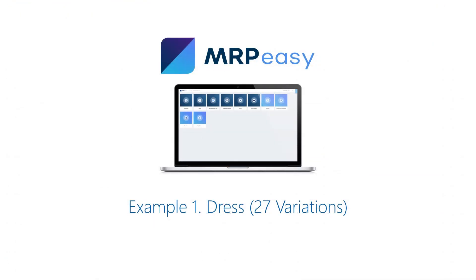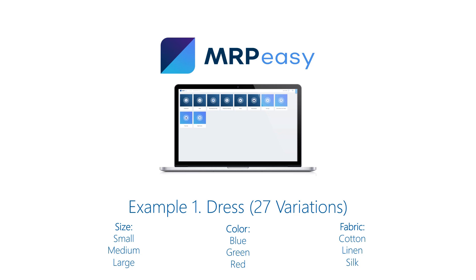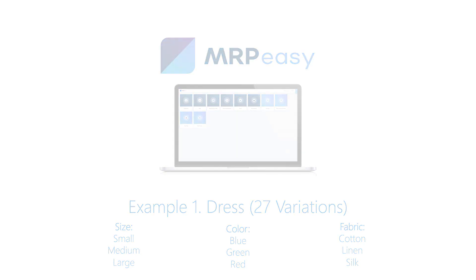In the first example, we will be configuring a dress that has several sizes, colors, and fabrics, with a total of 27 possible different variations. The exact same approach can be used for very different products, like electronics, industrial equipment and machinery, or other kinds of configurable products.